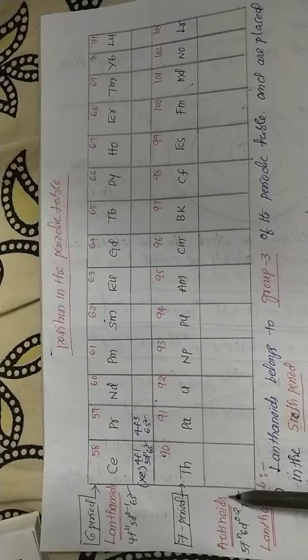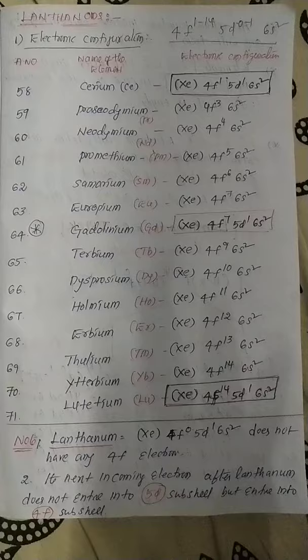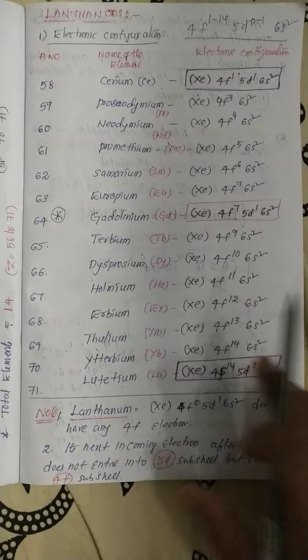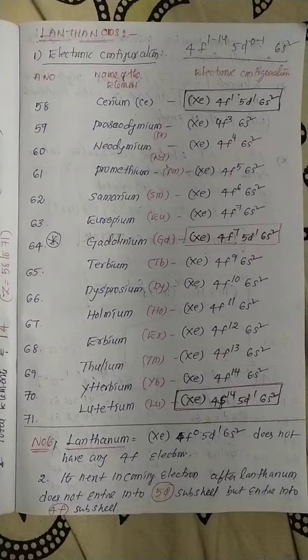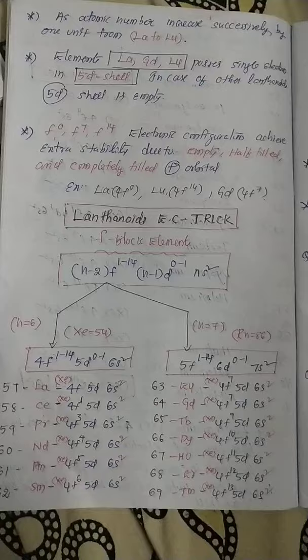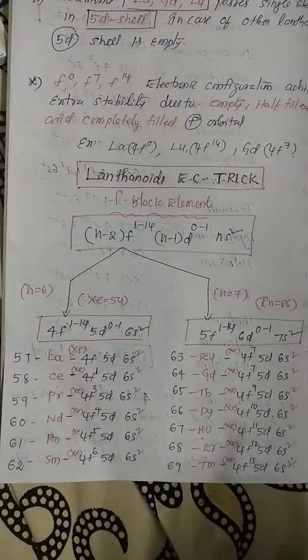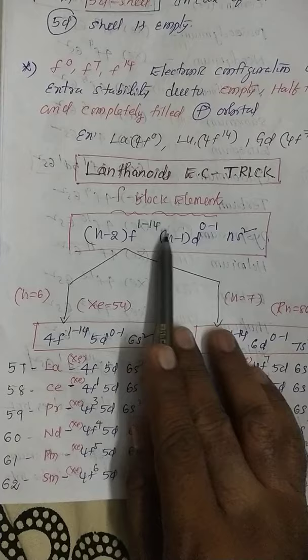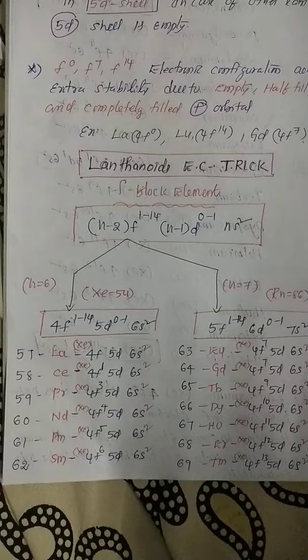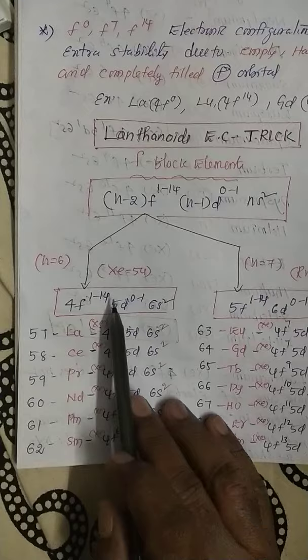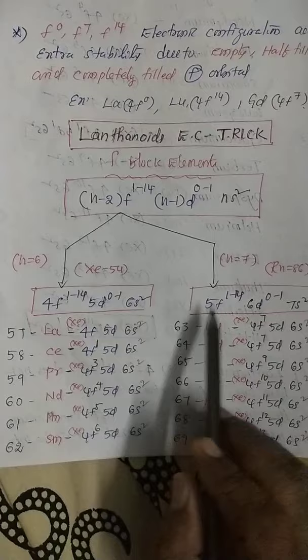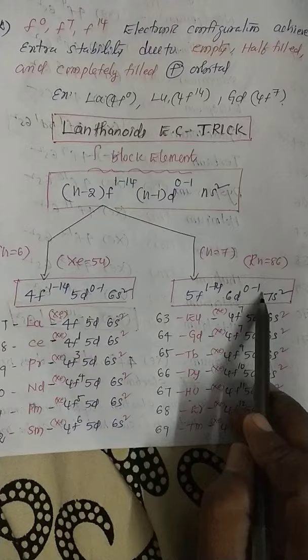Now I will teach shortcut tricks for writing electronic configurations. For lanthanides: 4f¹⁻¹⁴ 5d⁰⁻¹ 6s². For actinides: 5f¹⁻¹⁴ 6d⁰⁻¹ 7s². The common orbitals for all lanthanides are 4f, 5d, and 6s². The question is how many electrons fill each orbital for each element.